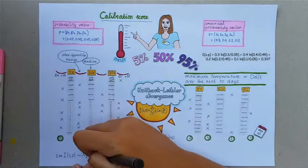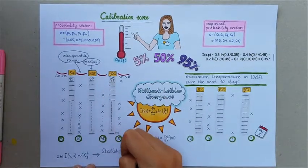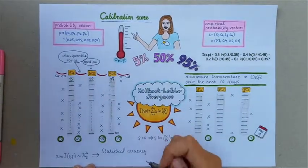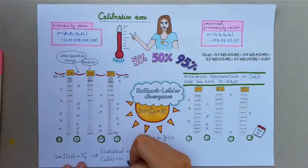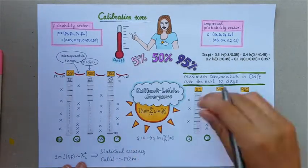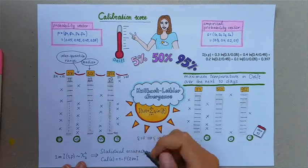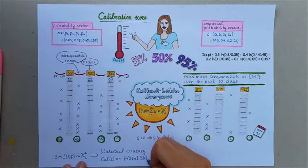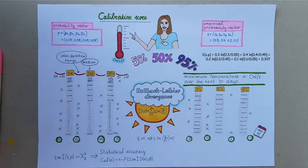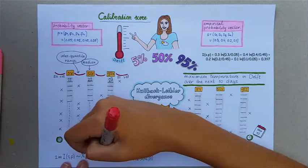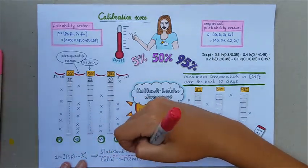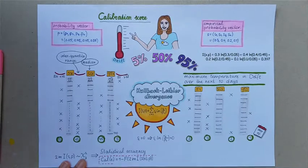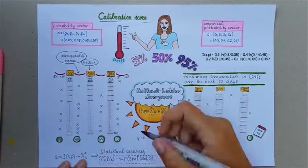Based on this result, we define the statistical accuracy or the calibration score of an expert E as 1 minus F evaluated at 2 times M times the relative information of an expert's probability vector P, where F is the cumulative distribution function of the chi-square random variable.